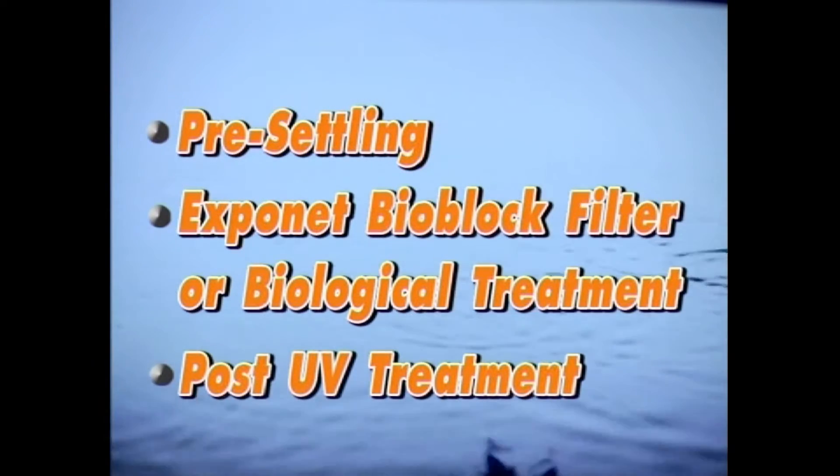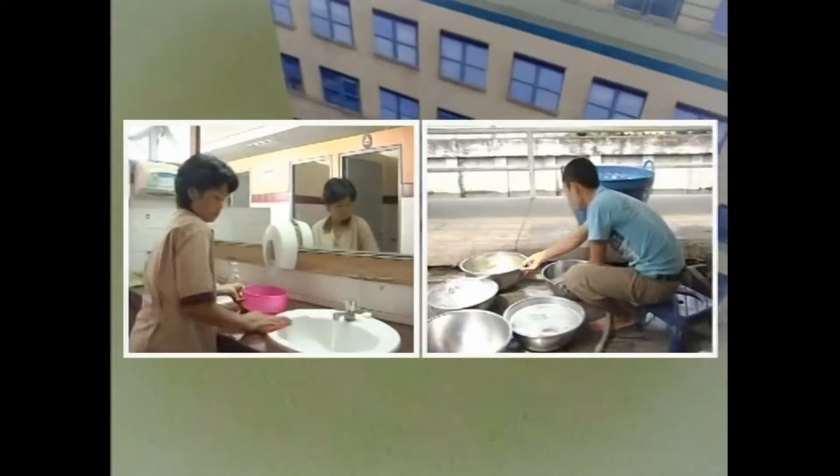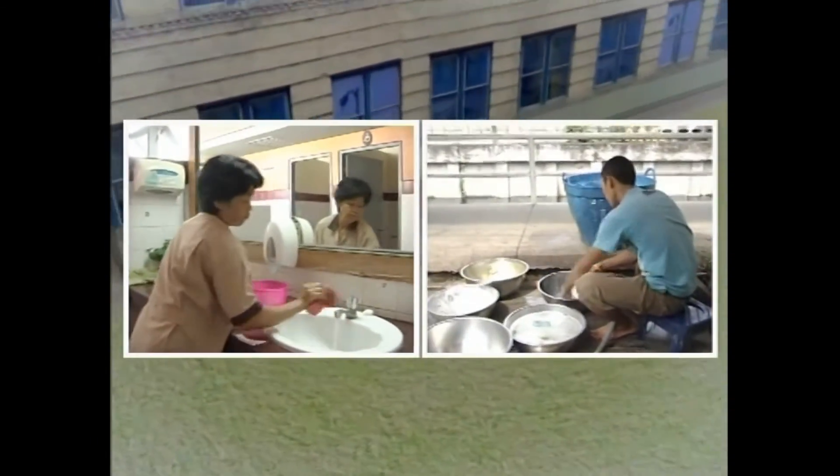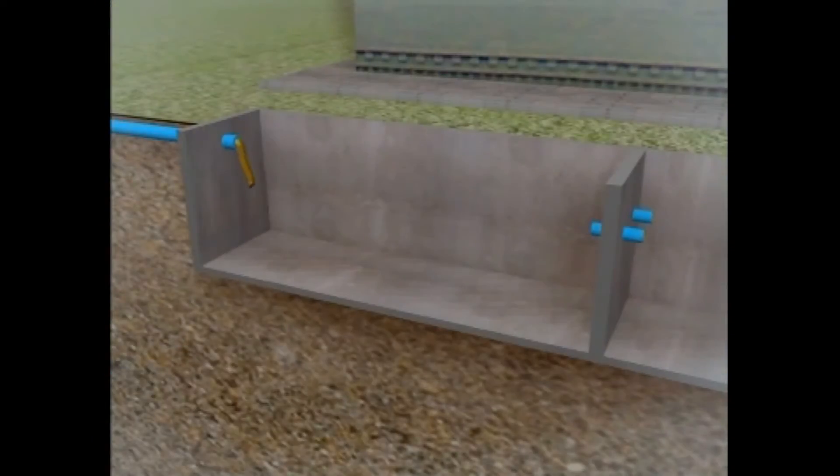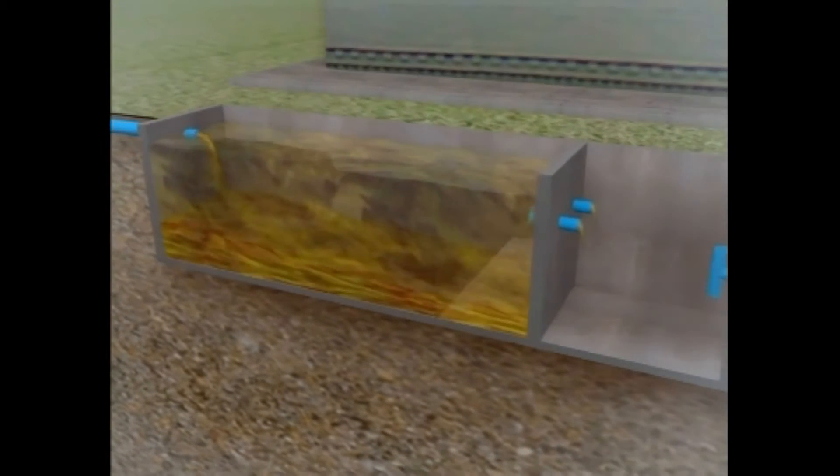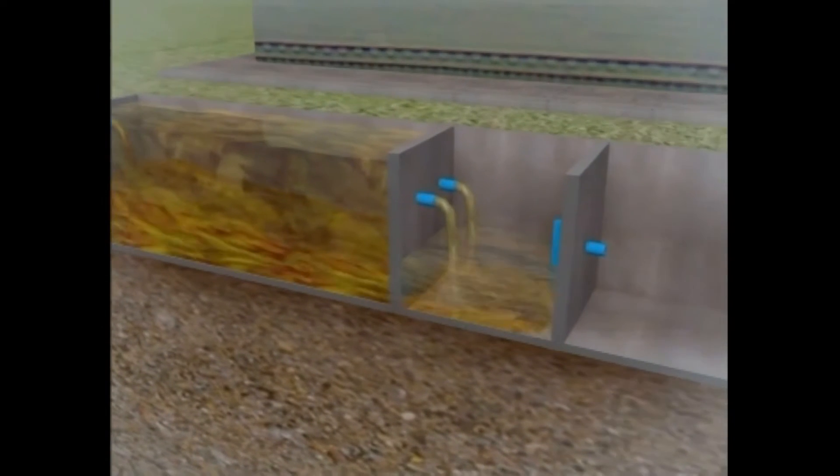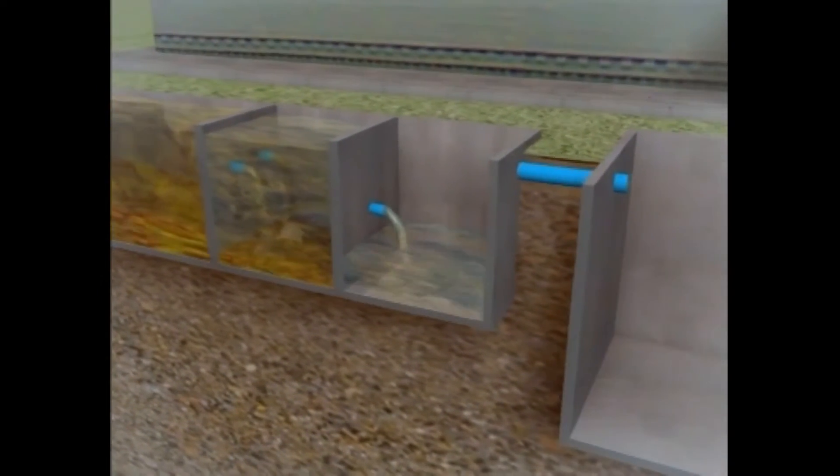The wastewater from using toilets and washing many kinds of household utensils flows together to the pre-settling tank, consisting of three internal channels. These three channels are the big tanks for precipitating.